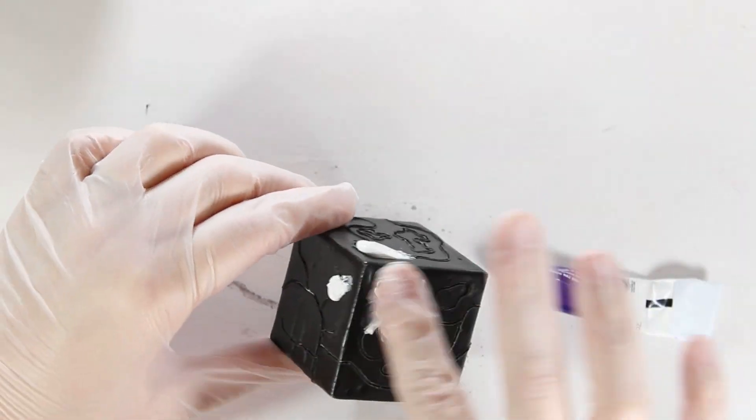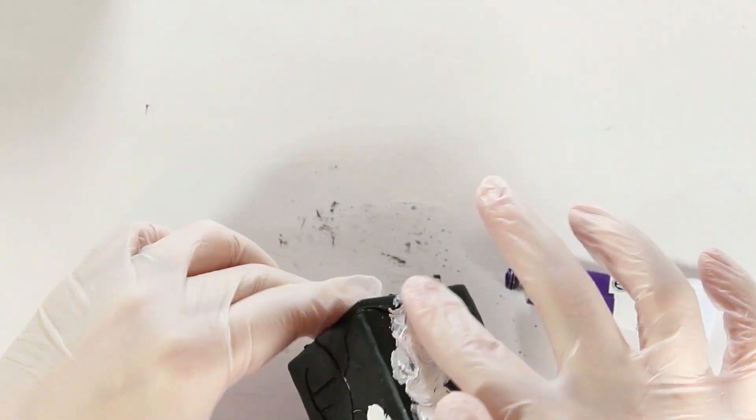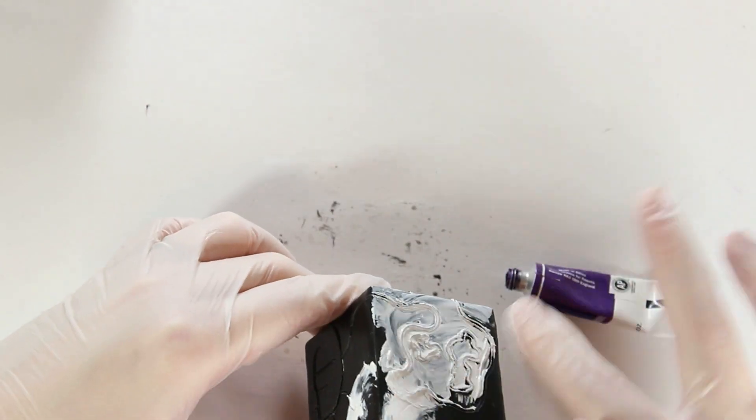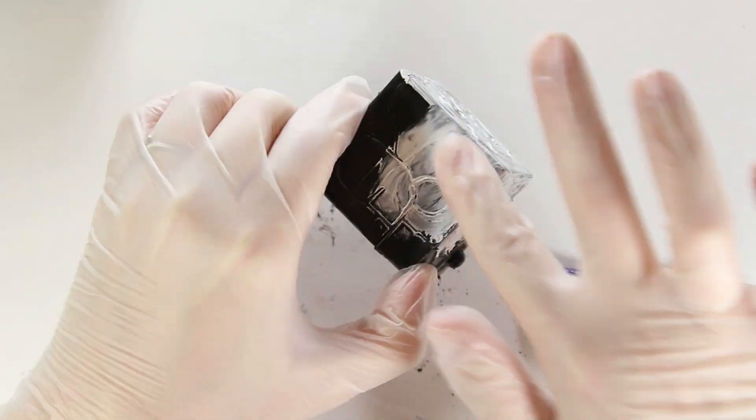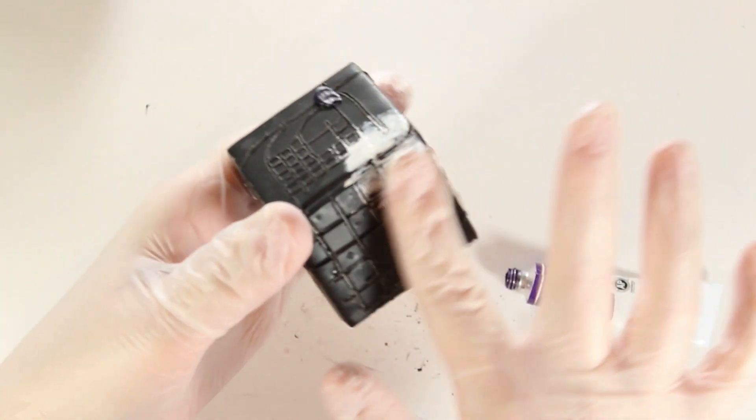I decided to do a little two-tone effect. So I'm using white and purple, and I kind of overloaded it. I was going to do one side at a time, but since I squeezed out so much oil paint, I decided to just cover all the sides at the same time and wipe them all off at the same time.